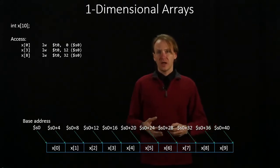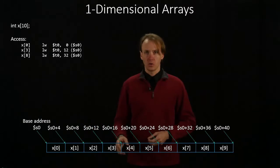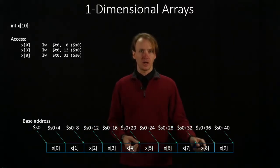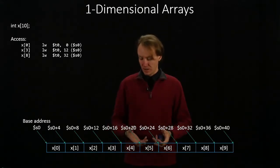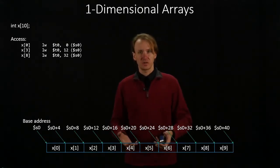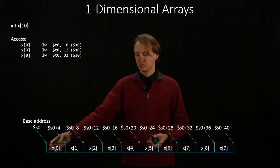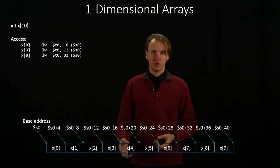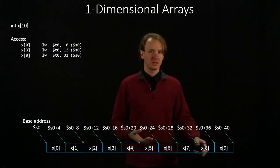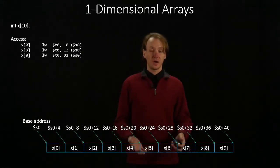If I just want to access a specific element in my array, say x0 or x3 or x8, then that's really easy to do. I could just look down at my data structure as I've written it and say, oh, x0 is at s0 plus 0, or x3 is at s0 plus 12, or x8 is at s0 plus 32. That will work.